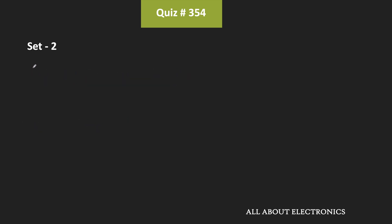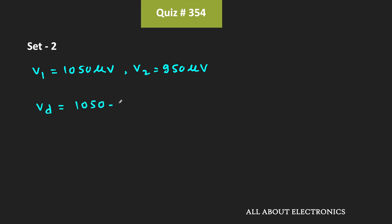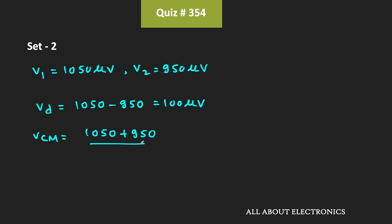For the second set of input signals, V1 = 1050 µV and V2 = 950 µV. The differential signal Vd = 1050 - 950 = 100 µV, while the common mode signal Vcm = (1050 + 950)/2 = 1000 µV. These are the differential and common mode input signals for the second set.